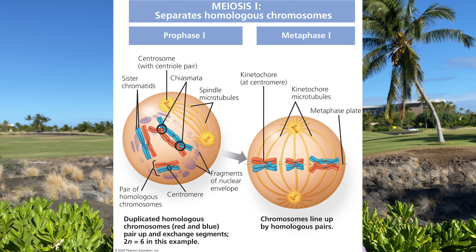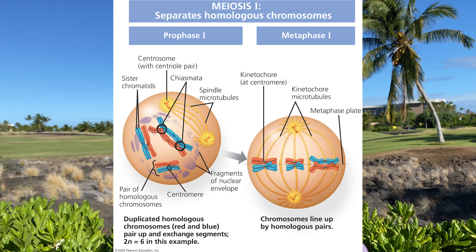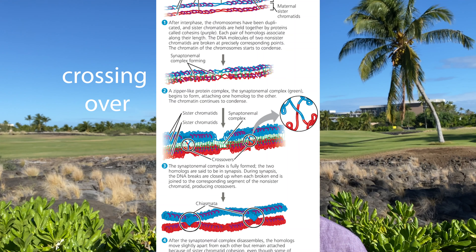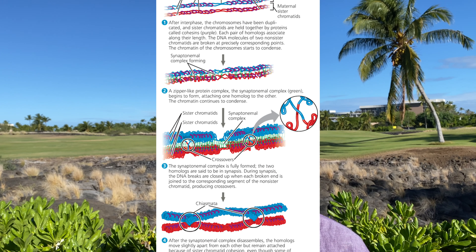Once the homologous chromosomes are side by side — or synapsed — an important event known as crossing over can happen. Regions of the DNA of non-sister chromatids are broken and rejoined to each other, swapping segments from one chromatid to another. This is actually visible in the form of a chiasmata.